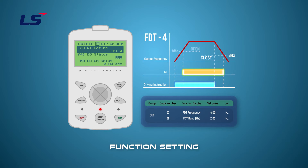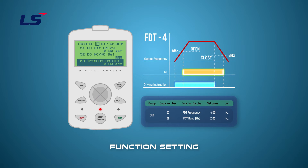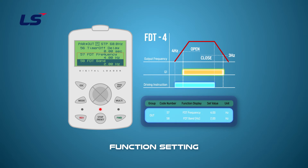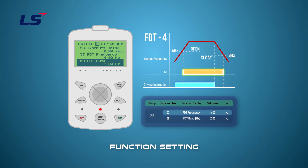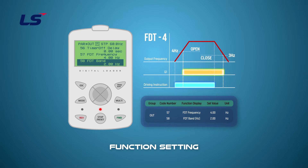You can set the opening at 4 Hz and closing at 3 Hz at outgroup 57 FDT frequency and outgroup 58 FDT band. When the frequency 4 Hz set by the FDT frequency is reached, the Q1 signal is output and the brake opens. The brake is closed at 3 Hz by the formula: FDT frequency minus FDT band multiplied by 0.5.